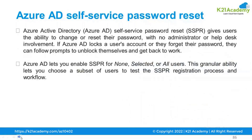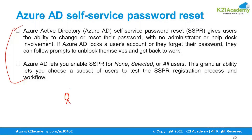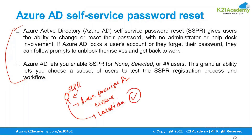For self-service password reset (SSPR), the main thing to know is that if you are enabling SSPR for a user, that user must be assigned an Azure AD Premium P2 license — at least a Premium P1 license — and the user's location must be updated. If either of these two conditions is not met, SSPR will not get activated, so keep that in mind.